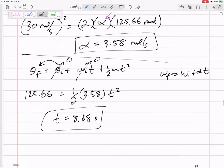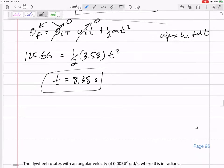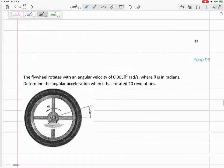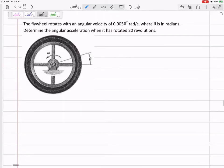Let's go to the next one. This flywheel rotates with an angular velocity of 0.005θ squared. What is the red flag? It's telling me this is not a constant angular acceleration problem. Might have to do derivatives or integrals. So I'm given an equation for angular velocity: 0.005θ squared.